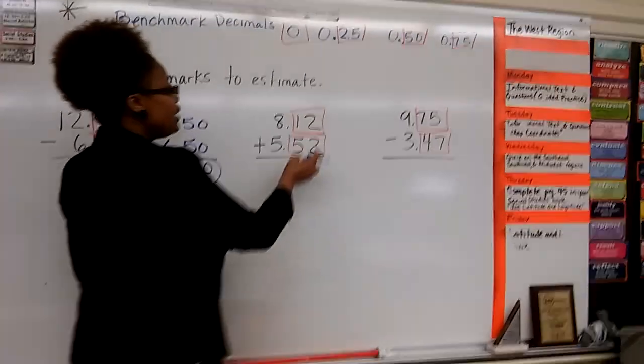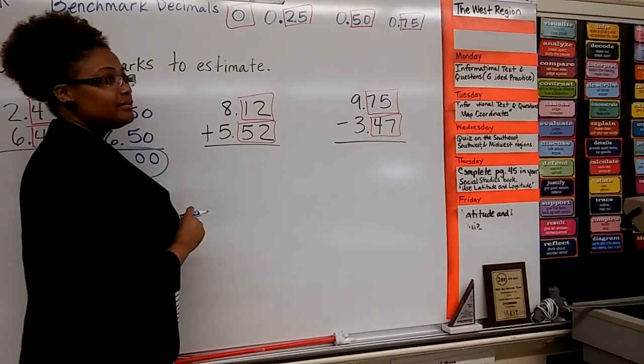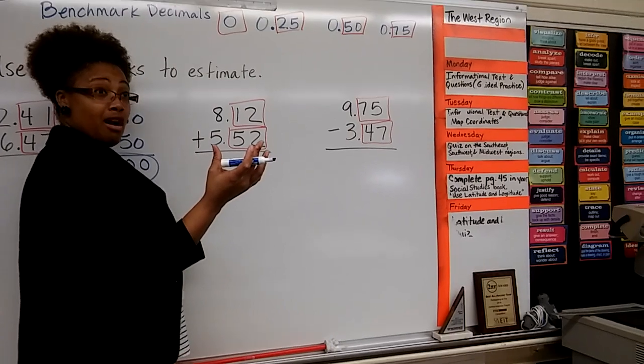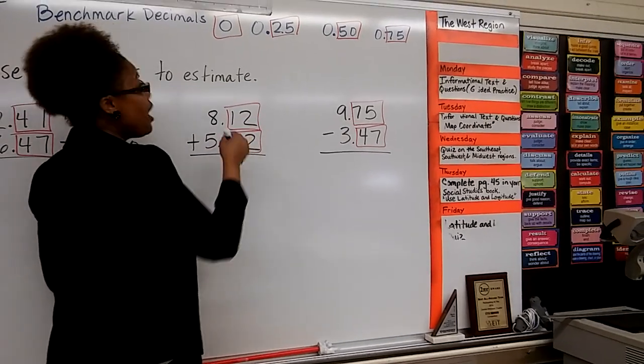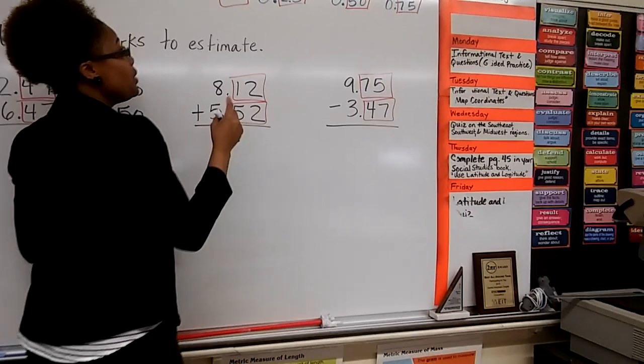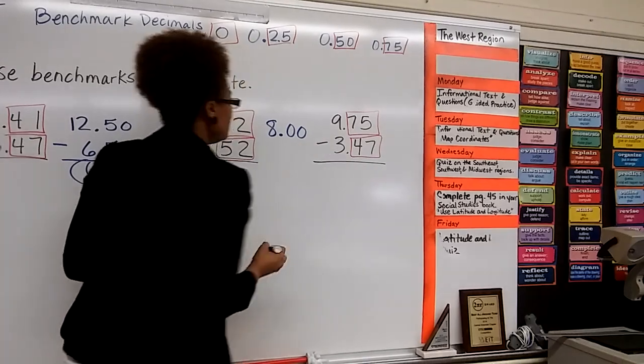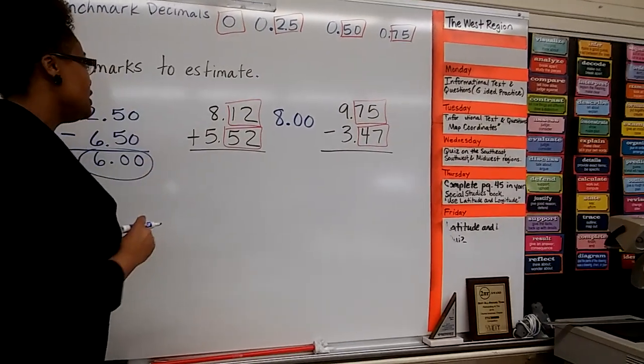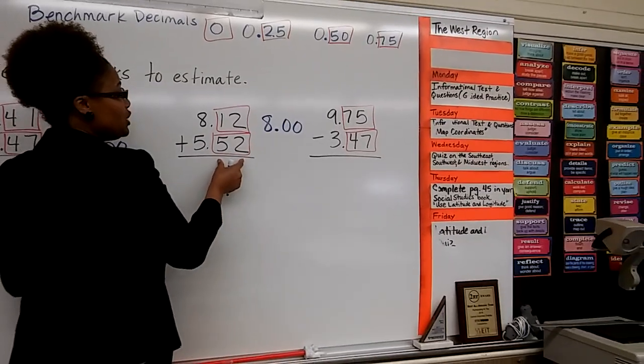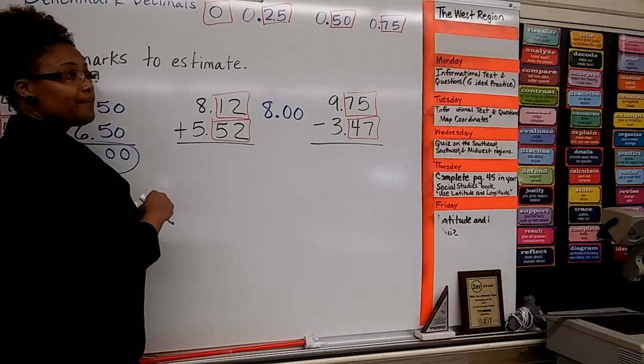Let's move to the second. Now, which benchmark decimals close to 12 hundredths? Zero. Zero? All right. Zero because 25 hundredths is 13 hundredths away, so it's closer to zero. So we're going to put 8 and zero hundredths, because no hundreds. All right, with 52 hundredths. Which benchmark decimals close to 52 hundredths?